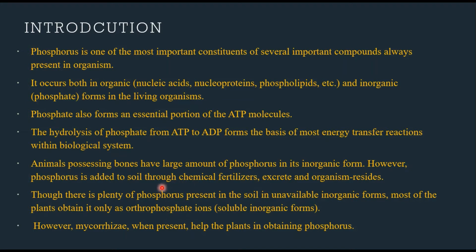Animals possessing bones have a large amount of phosphorus in inorganic form. Phosphorus is added to soil through chemical fertilizers and excreta of animals and organisms residing in the soil. Though there is plenty of phosphorus present in the soil, it is in unavailable inorganic forms, so most plants cannot access it. Plants obtain phosphorus in the form of orthophosphate ions, which are soluble inorganic forms of phosphorus.